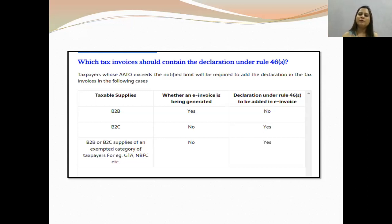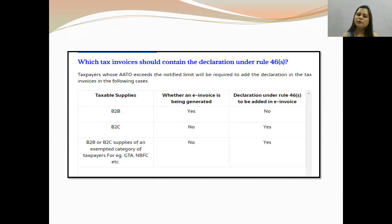The next category is B2C. Whether an e-invoice is being generated? No. Since you have not made an e-invoice and you are cutting a regular invoice, then you will give the declaration. Next: B2B and B2C supplies of an exempt category of taxpayers — such as GTA, SEZ units, NBFCs, banking institutions. Whether an e-invoice is being generated? No. If you have not made an e-invoice, then the declaration under Rule 46S is to be added to the invoice. Yes, definitely yes.